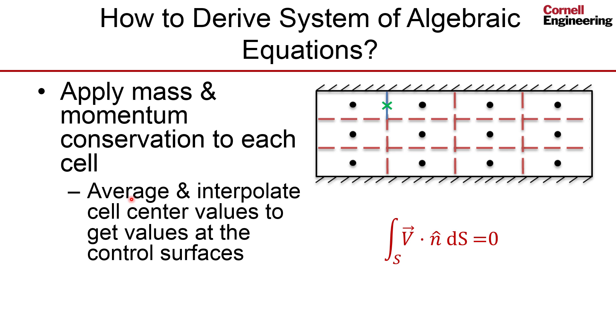So, one has to average and interpolate cell center values to get values at the control surfaces. These are called faces in the method. And we introduce an error because of the averaging and interpolation. And it's very important to know what level of error is introduced. And we will take a look at that later.